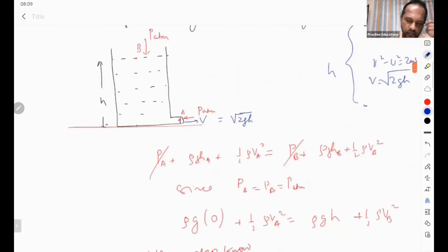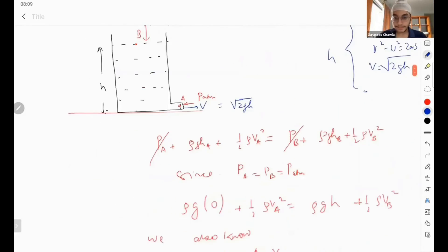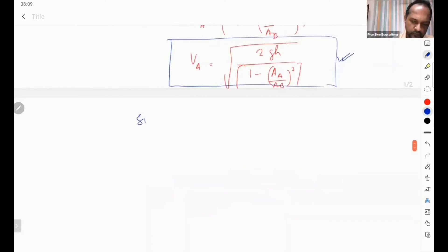So I see this theorem is from small opening. It doesn't say it's from an opening. Since A_a is very, very small than A_b, this implies that A_a/A_b is very, very small than 1. So we get v_a is equal to root 2gh.